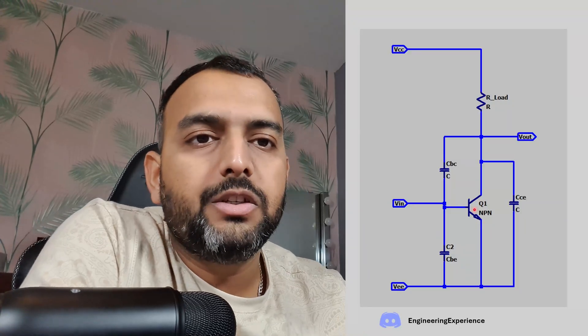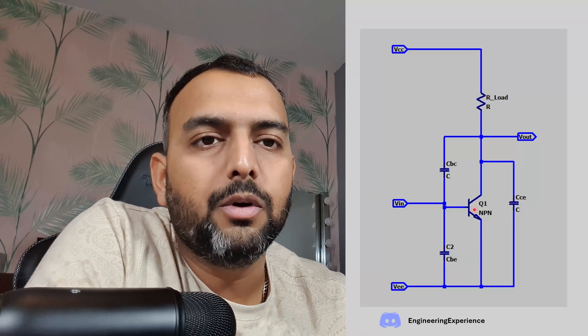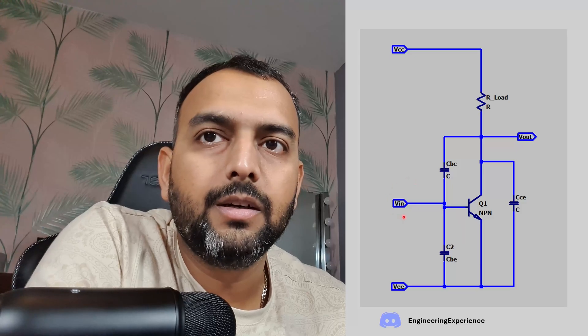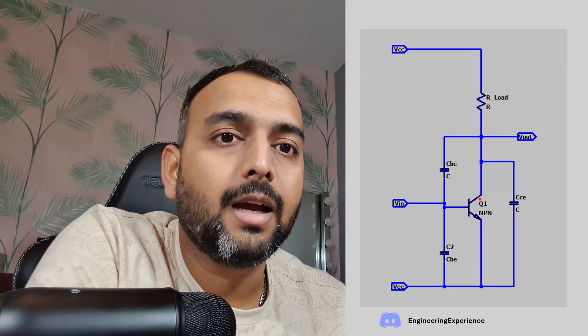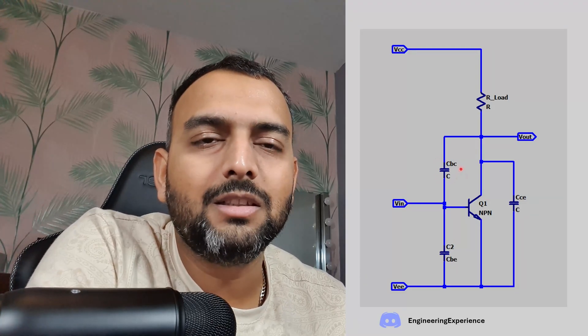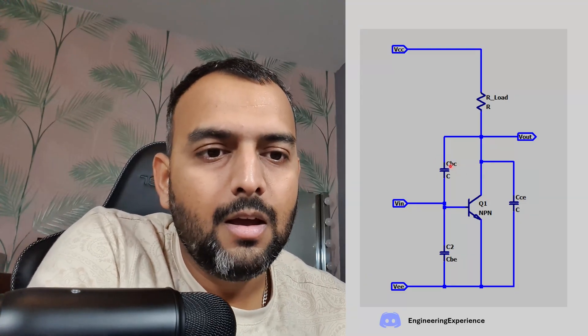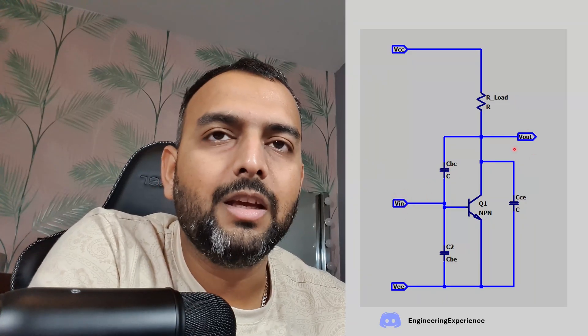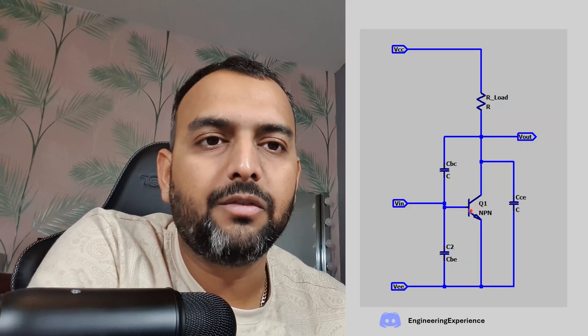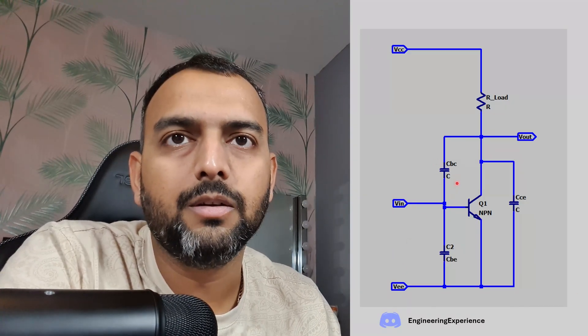What is the Miller effect? It describes a situation where the effective capacitance between an input and an output — specifically the parasitic capacitance of an NPN transistor — is effectively amplified by the gain of the transistor. So if this capacitance value is one picofarad, then due to the Miller effect the effective capacitance between the input and the output would appear as 100 picofarads if the gain of the amplifier is 100.